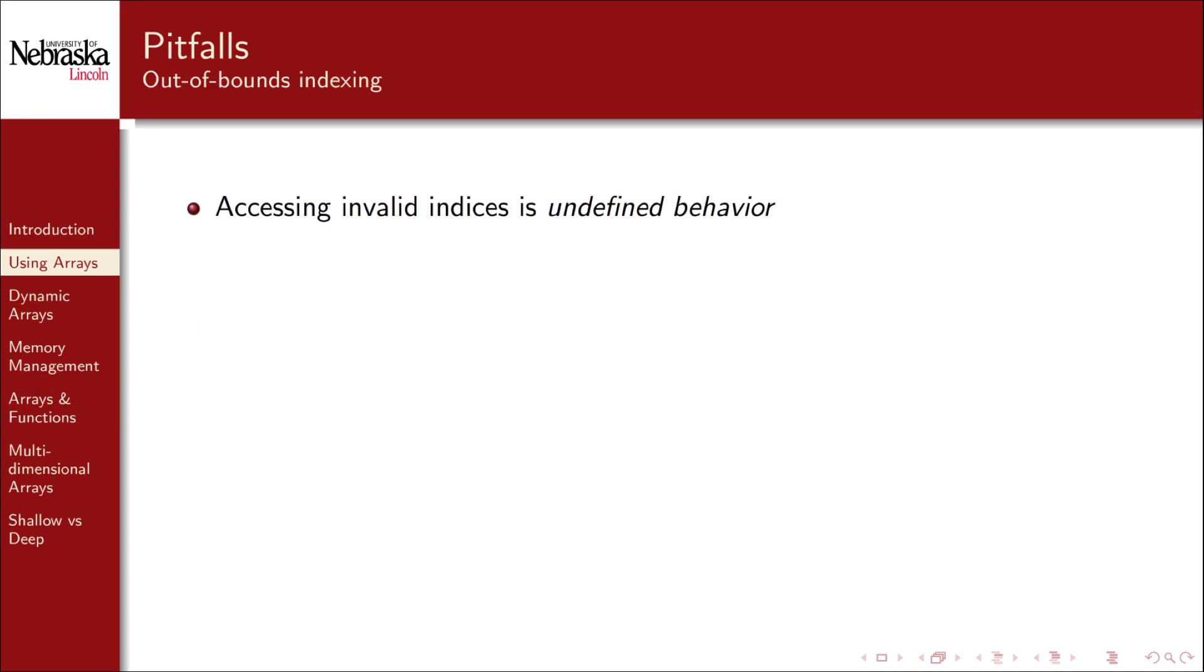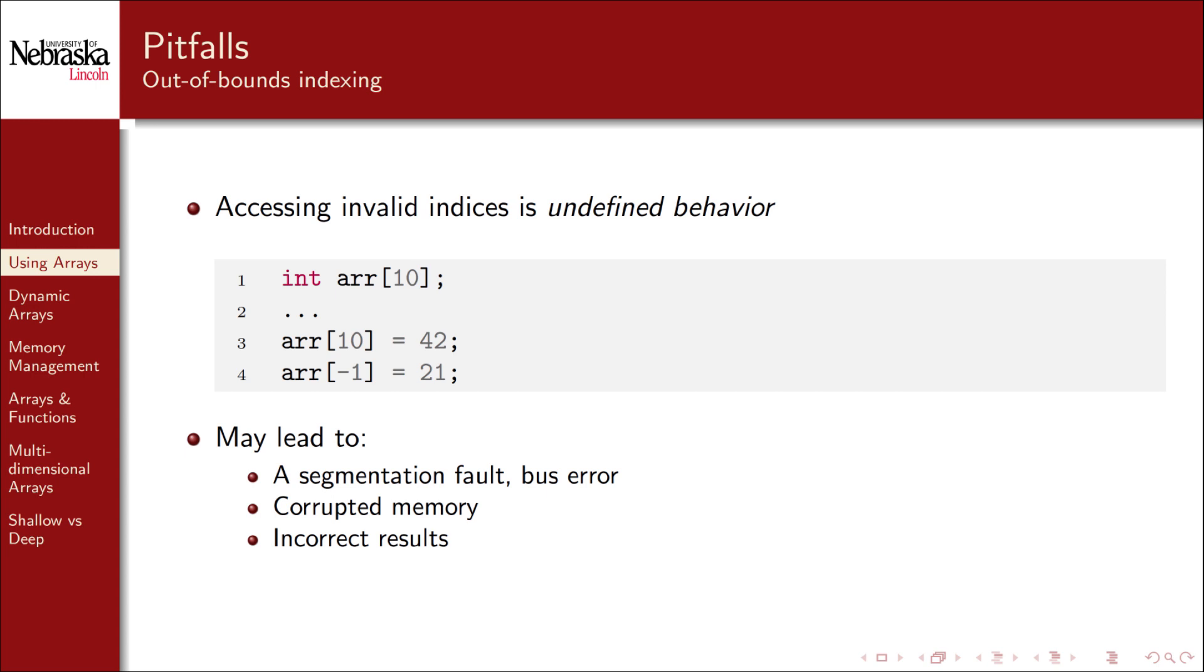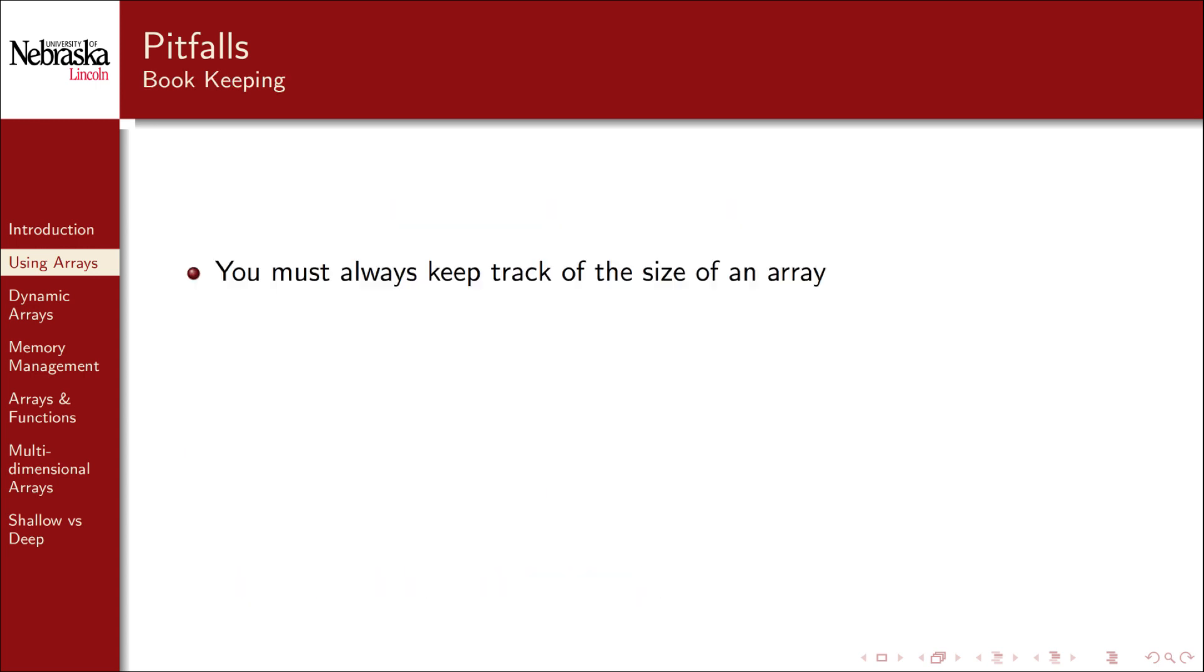Another pitfall is accessing invalid indices in an array which always leads to undefined behavior. In this example we've declared an array of size 10. Valid indices would include 0 through 9. Accessing the value at index 10 or negative values will be invalid. This can lead to any number of bad results including a segmentation fault, corrupted memory, or generally incorrect results. It is always your responsibility to do proper bookkeeping. Bookkeeping means always keeping track of the size of an array and ensuring that indices do not go out of bounds.